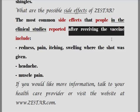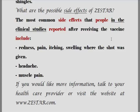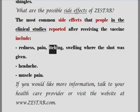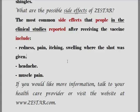redness, pain, itching, swelling — 주사가 주어지는 곳에 redness(붉어지는 현상), pain(통증), itching(가려움증), swelling(부풀어 오르는 것). headache(두통), muscle pain(근육통)입니다.